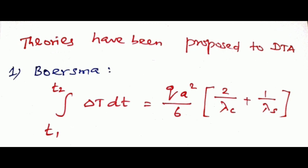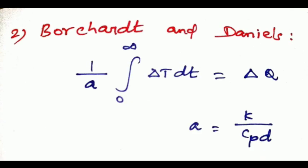Second theory is Borchardt and Daniel theory: 1 by a integral from 0 to infinity of delta T dt equals delta Q.